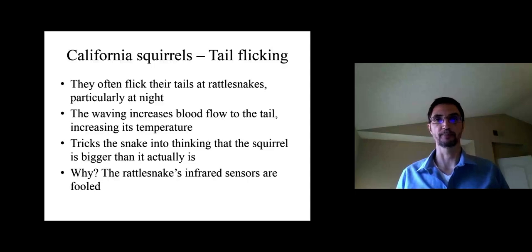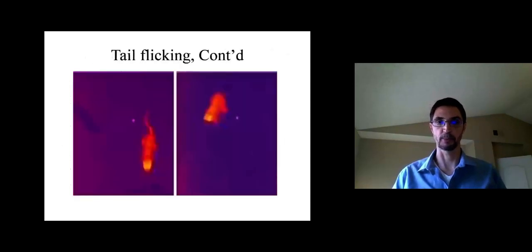So why is that? Well snakes, at least at night, they tend to rely on infrared sensors located on the other side of their head. So they have infrared sensors, and these can be fooled by the squirrel producing this tail-flicking response.